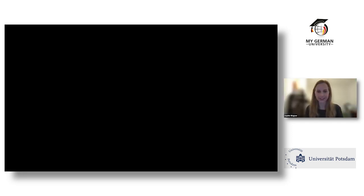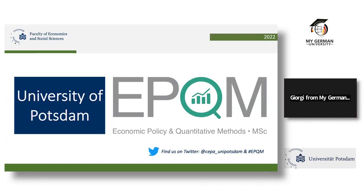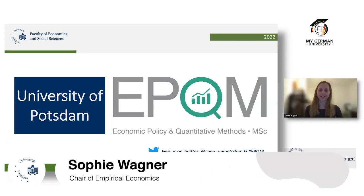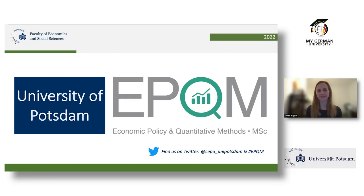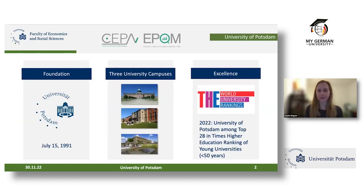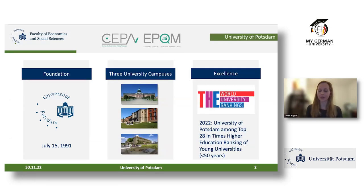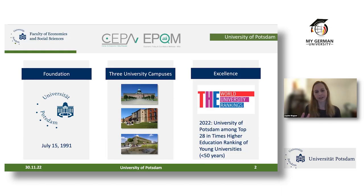Hello, my name is Sophie Wagner. I work at the University of Potsdam as an assistant researcher at the Chair of Empirical Economics and as program assistant for the master program Economic Policy and Quantitative Methods. The University of Potsdam is a somewhat young but well-reputed university with three campuses across the city. The economics department is at the Griebnitzsee campus, very close to both Potsdam center and Berlin — reachable by public transport in about 15 minutes.